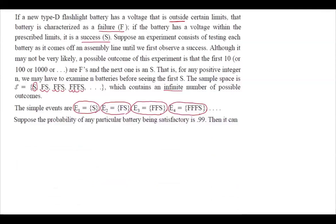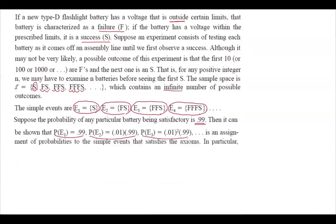Suppose the probability of any particular battery being satisfactory is 99%. Then it can be shown that the probability of the first event is 99%, the probability of the second event is 1% times 99%, the probability of the third event is 1% times 1% multiplied by 99%, and so on.